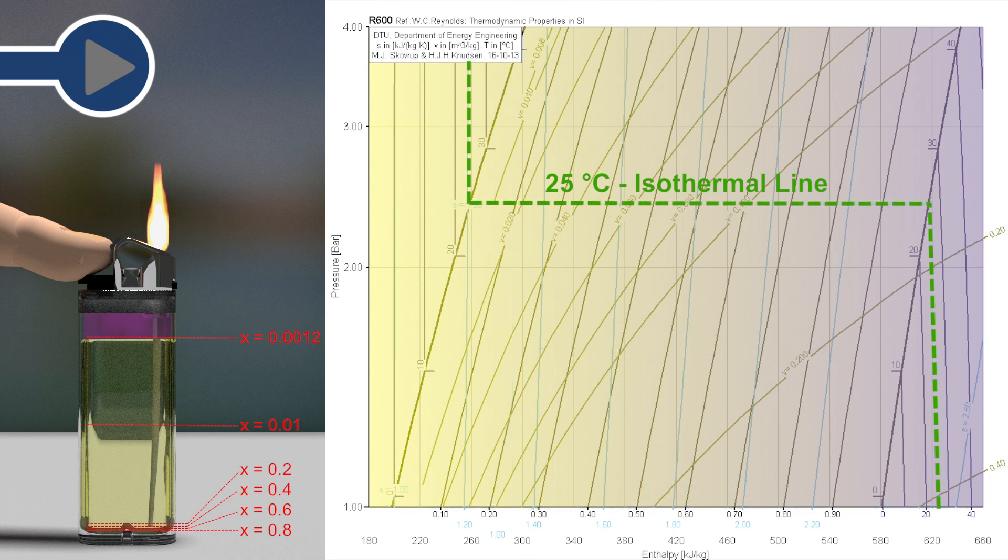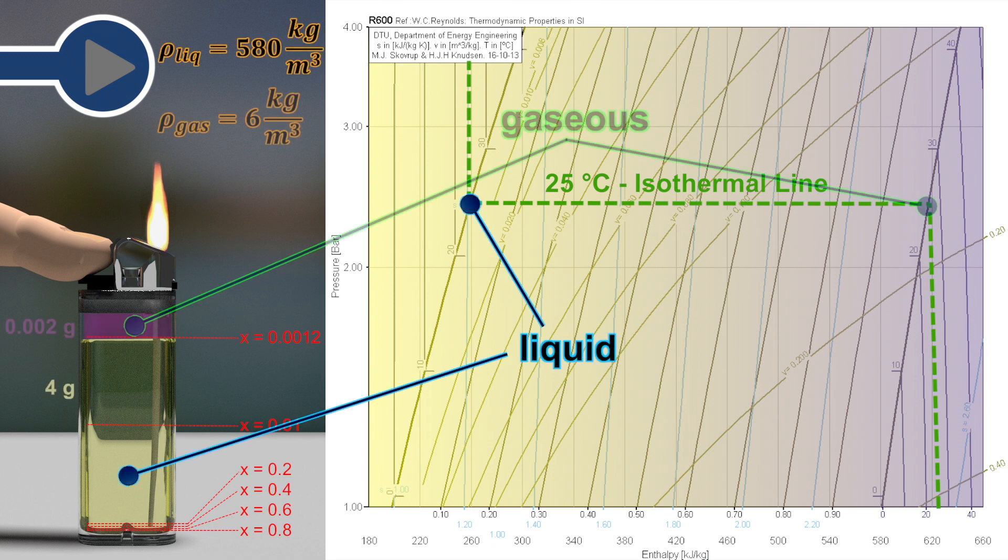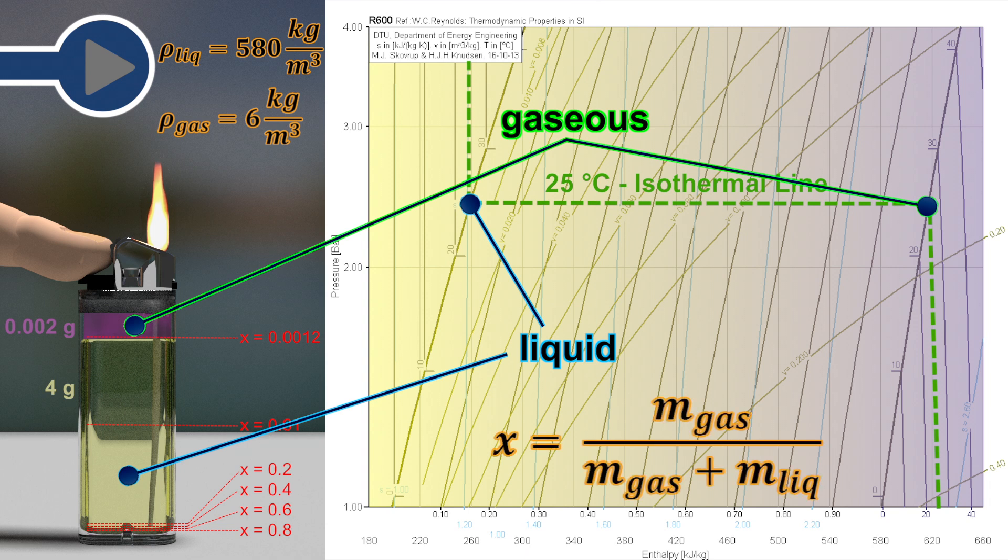The largest part of a volume is filled with liquid butane, which has a much larger density than gaseous butane. The vapor content X in a new lighter is almost zero.